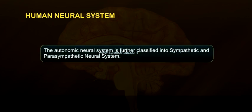The autonomic neural system is further classified into the sympathetic and parasympathetic neural systems.